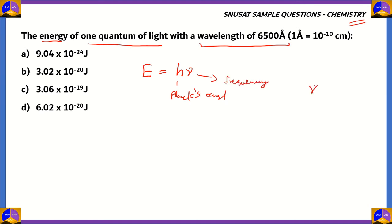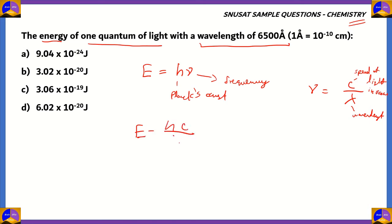In quantum theory, energy is E = hν, where h is Planck's constant and ν is the frequency. Frequency can be written as c/λ, where c is the speed of light in vacuum and λ is the wavelength. Therefore, E = hc/λ.